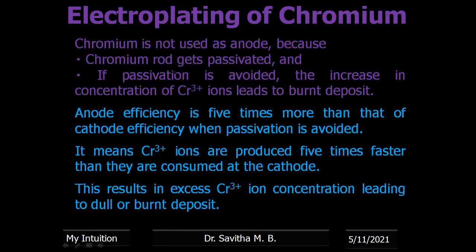Why can chromium not be used as anode? Chromium gets passivated — it gets covered by its own product and will not undergo further oxidation. If that passivation layer is avoided, chromium dissolves so fast that production of Cr³⁺ is five times higher than what is consumed at the cathode. This variation in anode and cathode efficiency leads to polarization. Therefore, lead or lead-antimony alloy is taken as anode instead, while Cr³⁺ ions are added to the electrolyte.